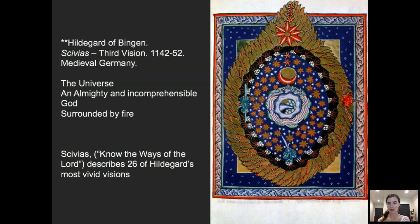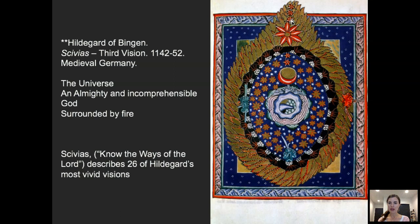Unfortunately, this manuscript was lost during World War II, and we only have facsimiles. It is known as Scivias — Know the Ways of the Lord — and it describes 26 of Hildegard's most vivid visions. One is known as 'the universe, an almighty and incomprehensible God surrounded by fire,' featuring a rendering of the universe with the sun, moon, starry skies, and fiery elements — very abstract, rich in color, giving a sense of what she must have pictured during these visions.